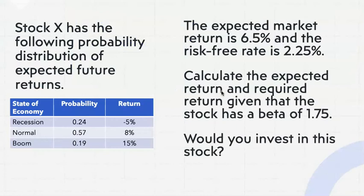Here's a complete example. Stock X has a probability distribution of expected future returns: a 24% chance of recession with a return of negative 5%, a 57% chance of normal economy with an 8% return, and a 19% chance of a boom with a 15% return. The expected market return is 6.5% and the risk-free rate is 2.25%. The stock has a beta of 1.75, which is greater than 1, so the required return will be greater than the market rate of 6.5%.